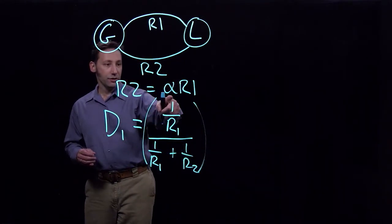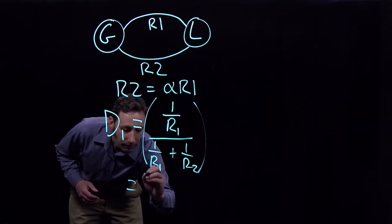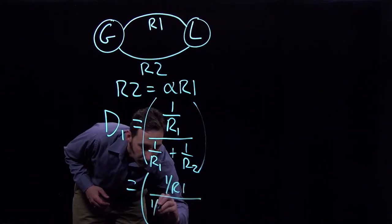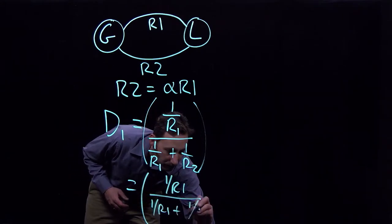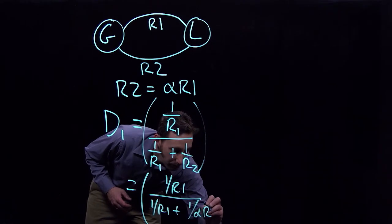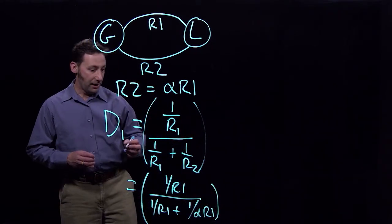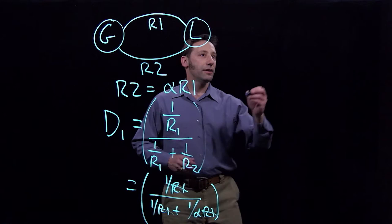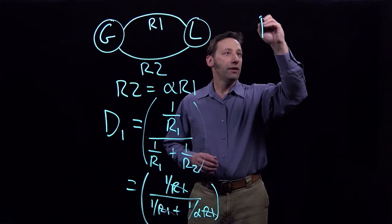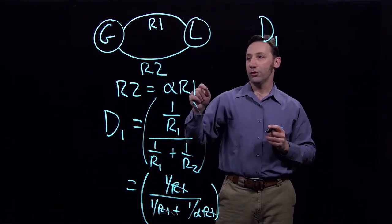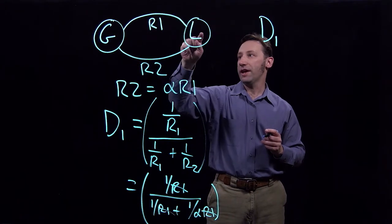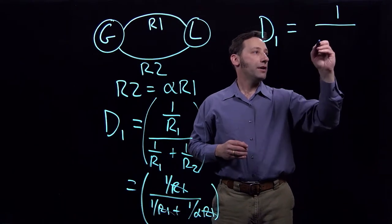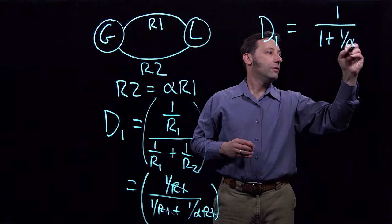Then we're going to make our substitution alpha R1 for R2. And all of the R1s are going to cancel. And so what we're left with is that the distribution factor on this line, which is the proportion of the power that goes from G to L that flows over this line, is going to be equal to 1 divided by 1 plus 1 over alpha.